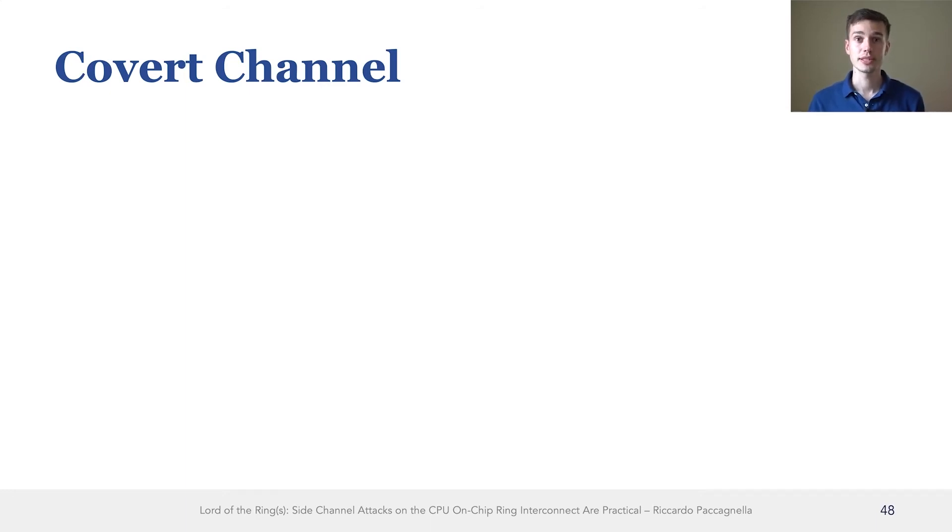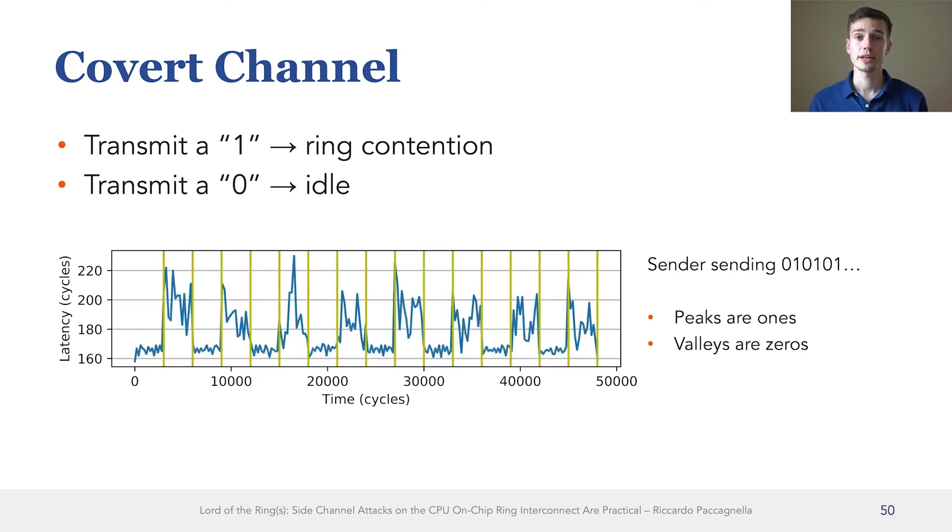And the way they can do this is that they can set themselves up so that contention is guaranteed to occur on the ring interconnect. And then they can use this as a channel to transmit zeros and ones, and then arbitrary information. You can see here an example where the sender is sending to the receiver a sequence of alternating ones and zeros. And you can see how easy it is for the receiver to tell when there is a one, namely a peak of contention versus when there is a zero, which is just a valley with no contention.